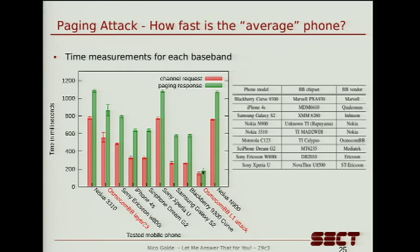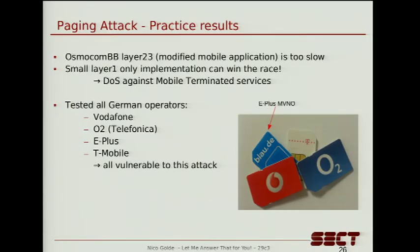The timing difference between channel request and paging response in our firmware is really small because there is no scheduling and queuing involved — when we receive a message from the network we just respond right away. We have a pretty good chance to win this race in practice. I tested this with all major operators in Germany: Vodafone, O2, E-plus, and T-Mobile — and all of them are vulnerable to this attack. This means you have a denial-of-service attack against mobile terminated services. By responding faster to a paging request, you can prevent the service from being delivered to the victim — basically selectively jamming the transmission of the service.